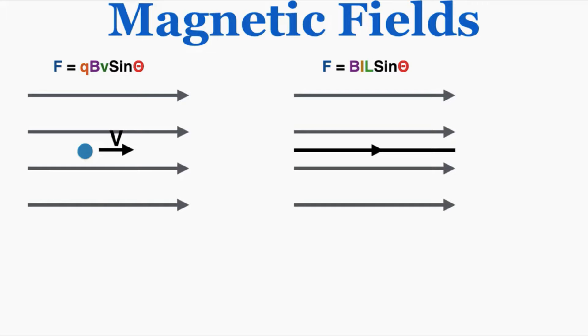Theta is the angle between the velocity of the particle, or the direction of the current, and the field. You can see in this instance that both are parallel to the field itself—they're pointing in the same exact direction as the field.